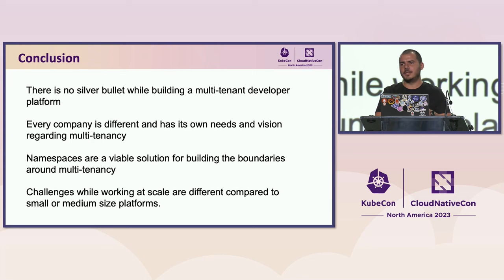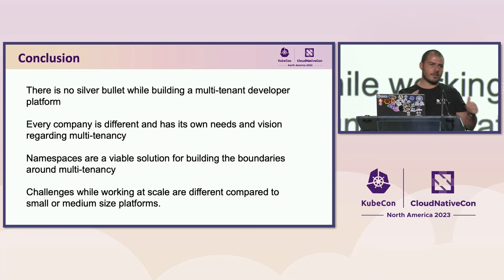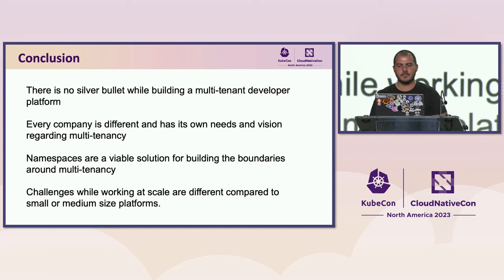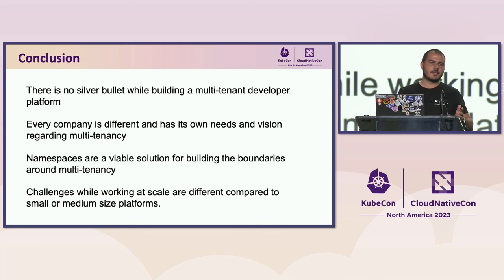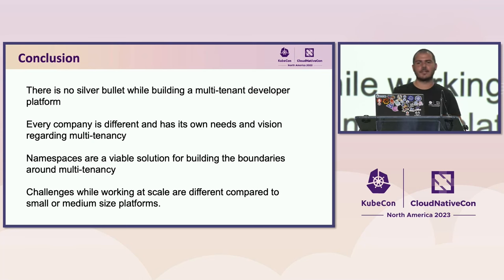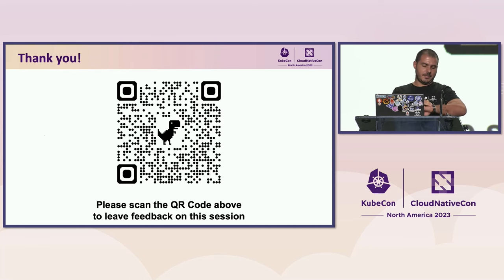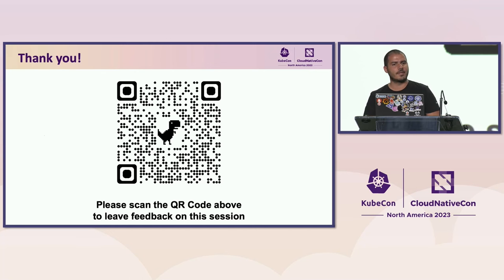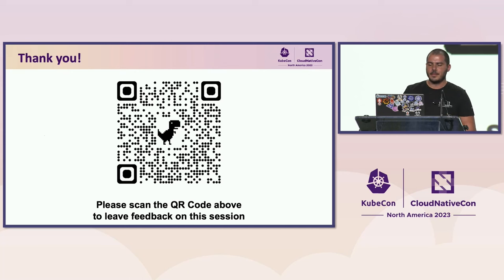There is no silver bullet while building a multi-tenant developer platform — you should always align with your product development teams in this process. Every company is different and has its own needs and vision regarding multi-tenancy architecture, and Kubernetes namespaces are feasible to build the boundaries. Challenges while working at scale are different compared to small or medium-sized platforms. Thank you for your attention — we have time for questions and will also be available for the next 10-15 minutes for offline questions.